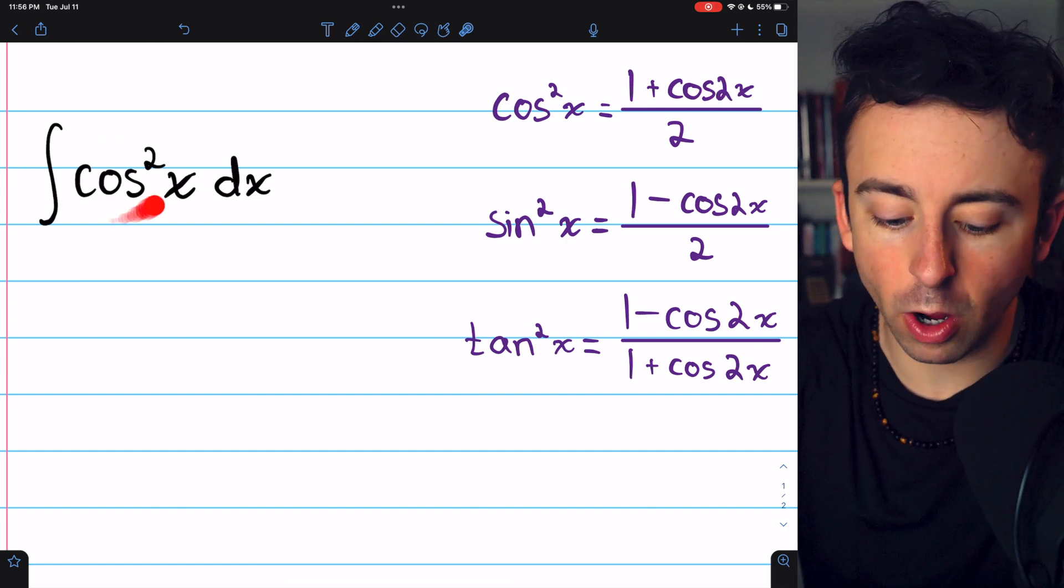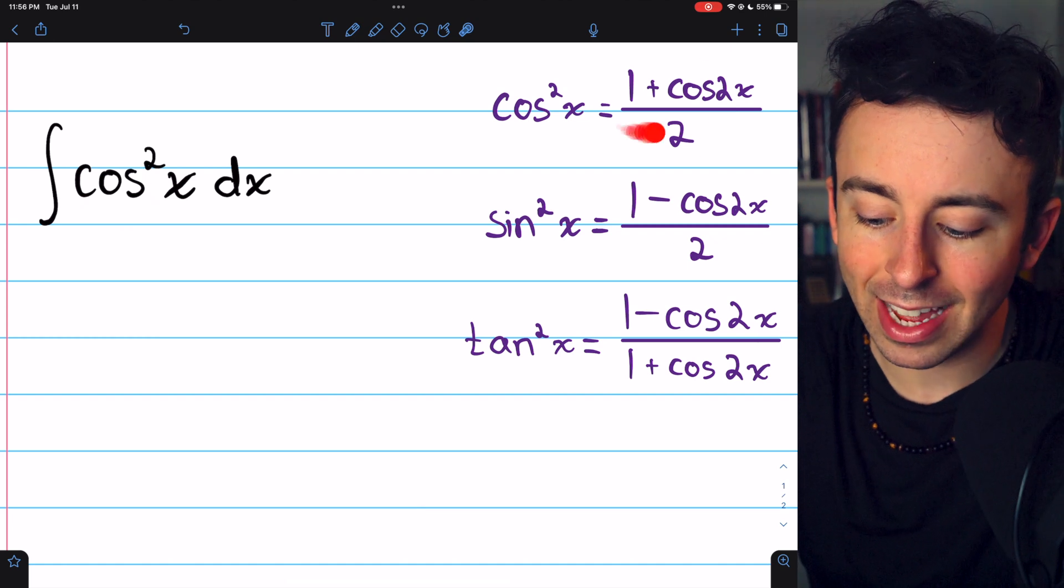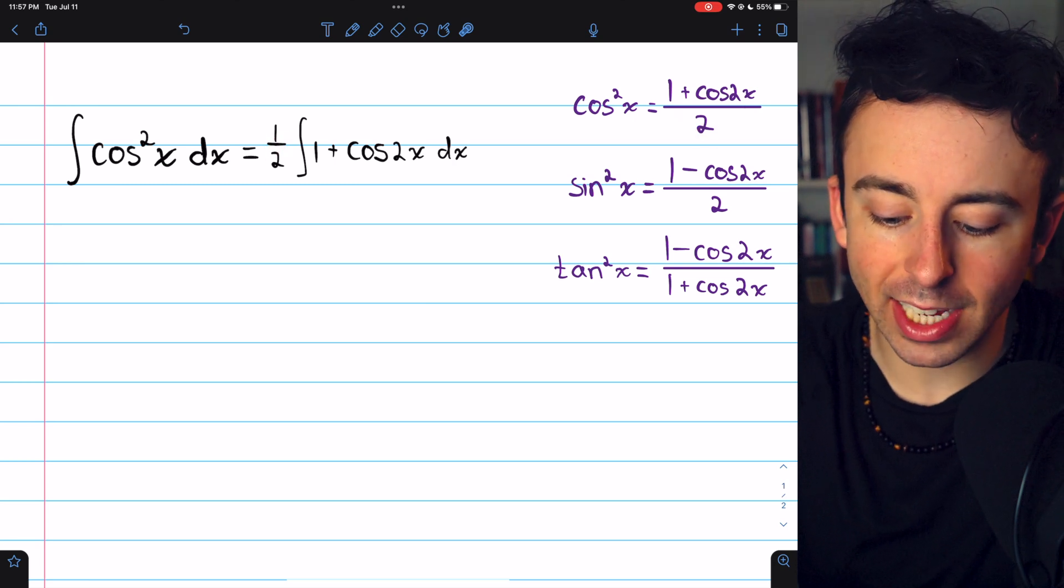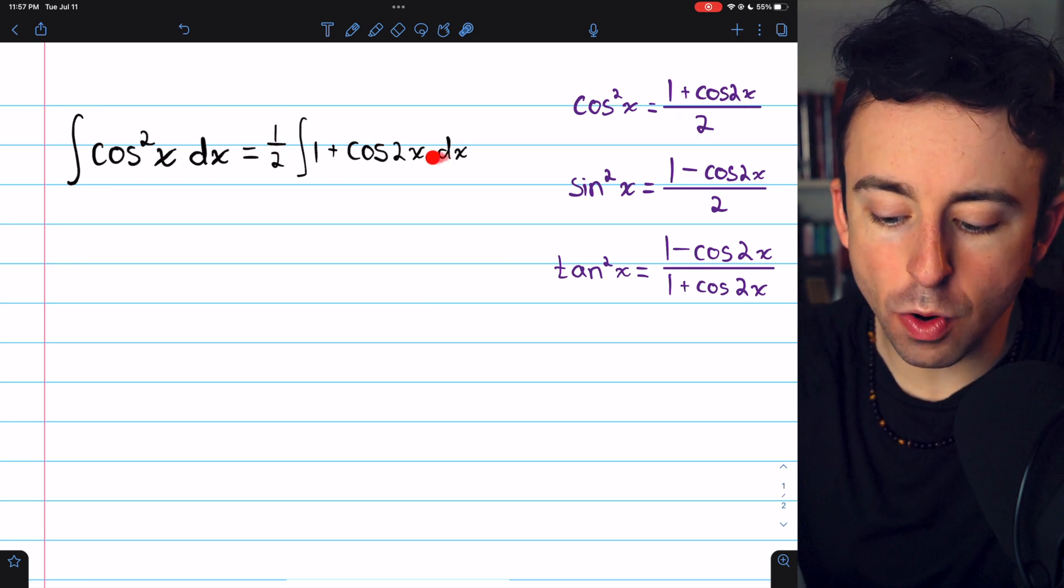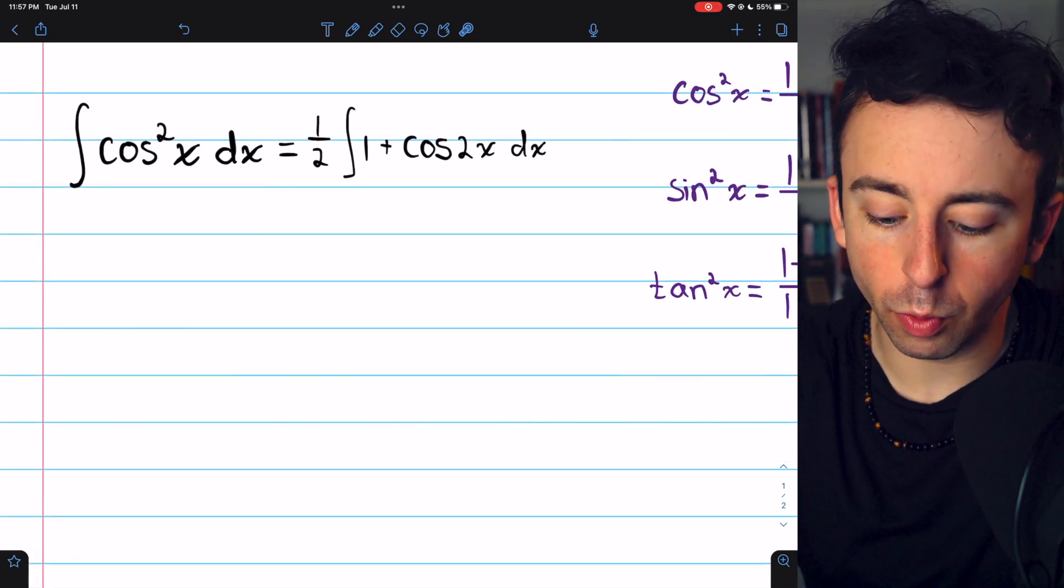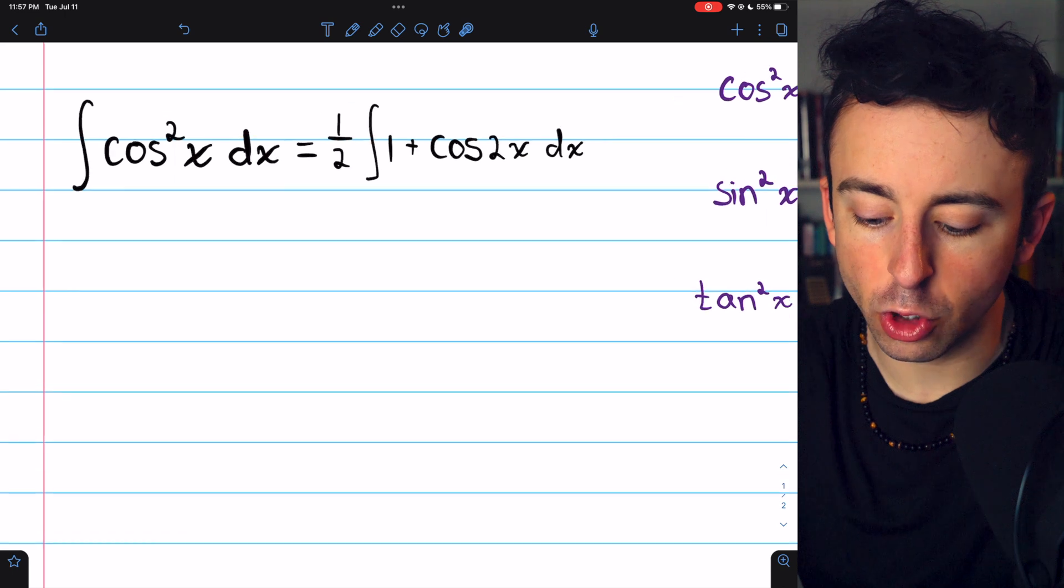If we rewrite cosine squared of x like this, we'll be able to integrate no problem. So applying this formula, let's write that factor of 1 half outside the integral, which just leaves the numerator inside the integral. 1 half the integral of 1 plus cosine of 2x dx.